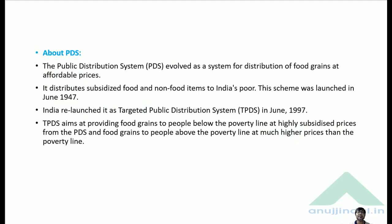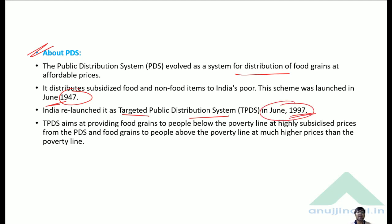The Public Distribution System was evolved as a system for distribution of food grains at affordable prices, way back in 1947. It was relaunched as the Targeted Public Distribution System in June 1997. TPDS aims at providing food grains to people below the poverty line at highly subsidized prices, and to people above the poverty line at much higher prices.